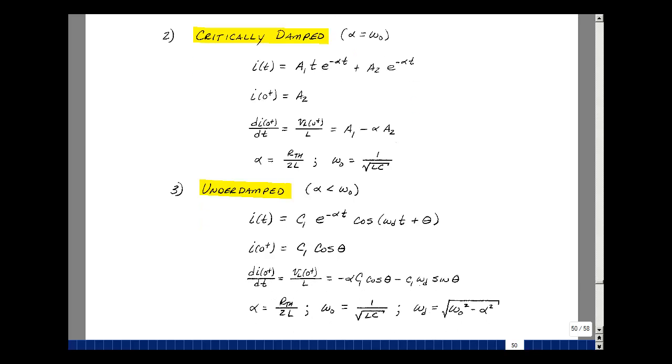Lastly, underdamped case, again, a little different form of the solution. And we adjusted the equations for initial conditions on the current and the derivative of the initial current, and corresponding equations for both of those. This is how you calculate the natural response of a series RLC circuit.